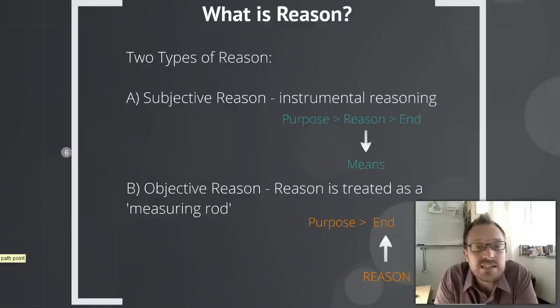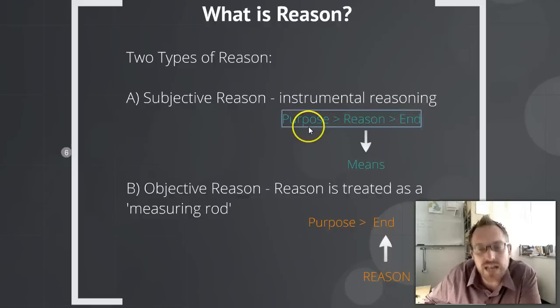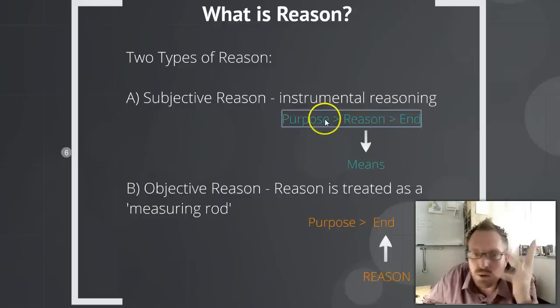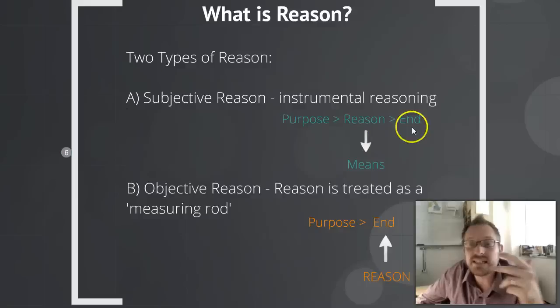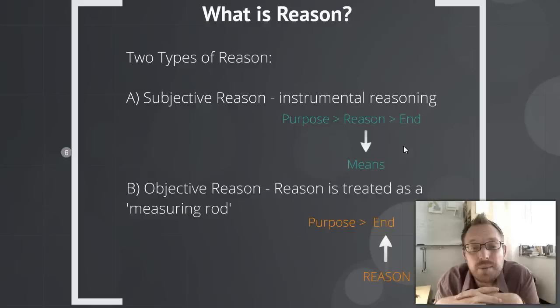There are two types of reason that Horkheimer distinguishes. The first is what we might call subjective reason, also sometimes referred to as instrumental reason. Instrumental reasoning is where reason is always a means towards some sort of end. For instance, we have a purpose — let's say I want to become a millionaire — and then I use my reason to calculate some sort of way to get to that goal. So for subjective reasoning, reason is a means, an instrument, a tool.